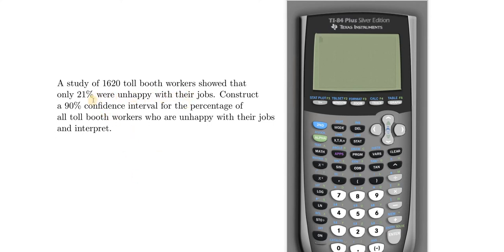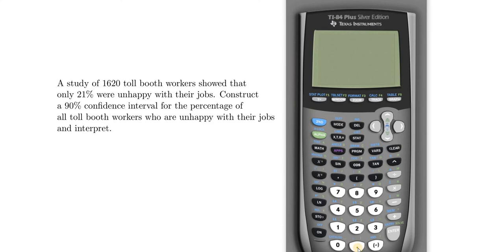So to find the successes, we have to compute 21% of 1620. So if you remember from math, of means multiply. So that's .21 times 1620. Let me hit enter. So 340, that's going to be our x.